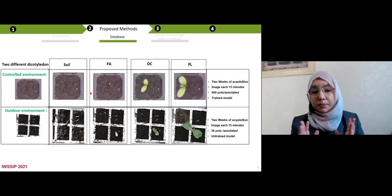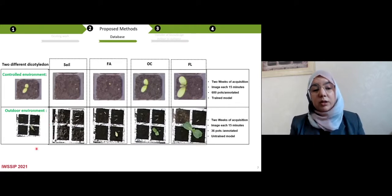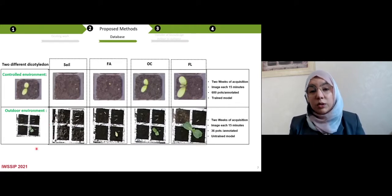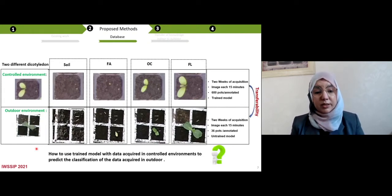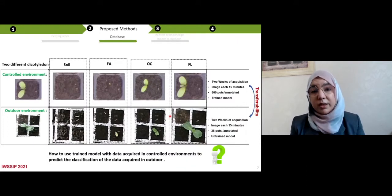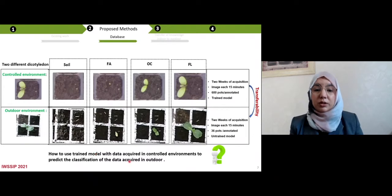So we have this large database annotated in control environment and the pre-trained model, and we acquired a new small dataset in outdoor condition. And here our question is how to use this trained model with data acquired in control environment to predict the classification of data acquired in outdoor environment.